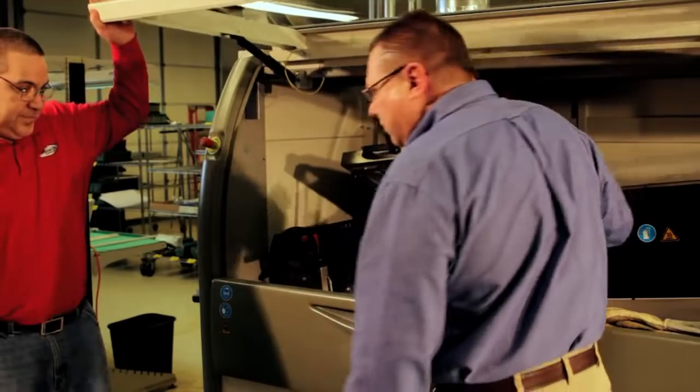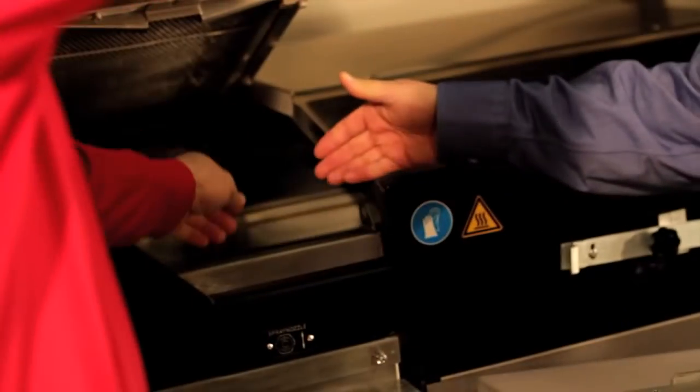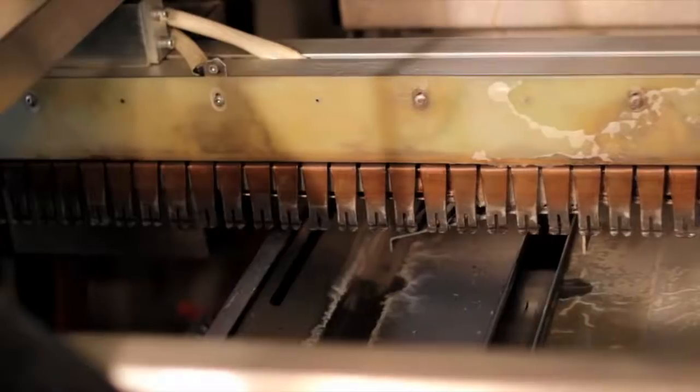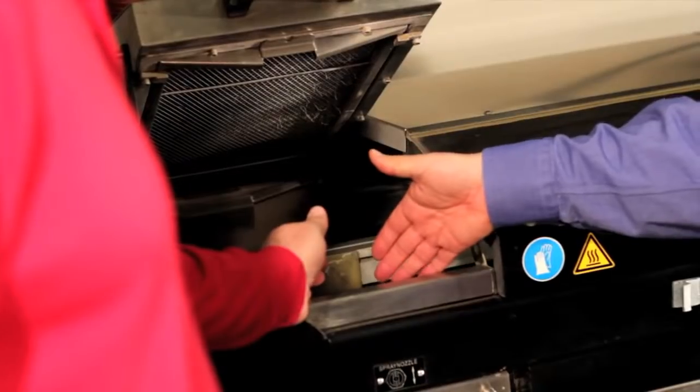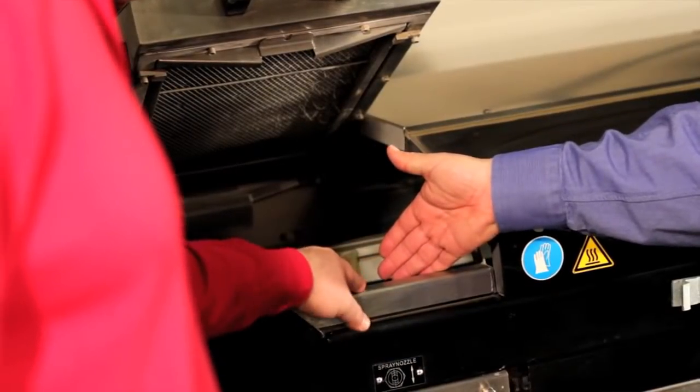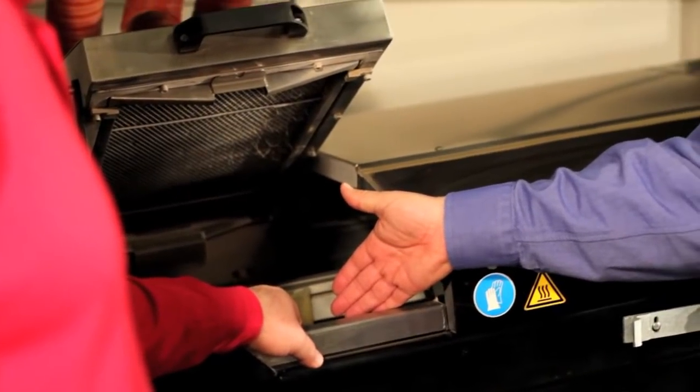The first feature that we like about the Delta III is the fluxing system. There is a single nozzle spray jet fluxer. This new fluxing system has saved us 50% in our flux usage over the course of the last two years.